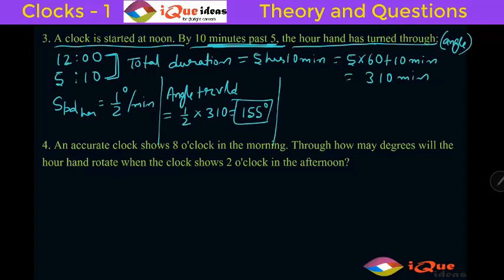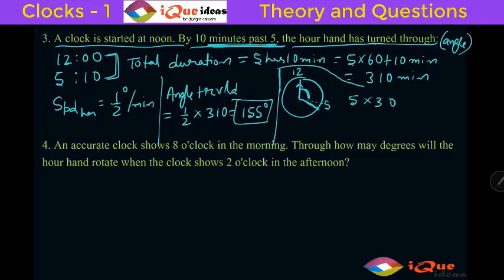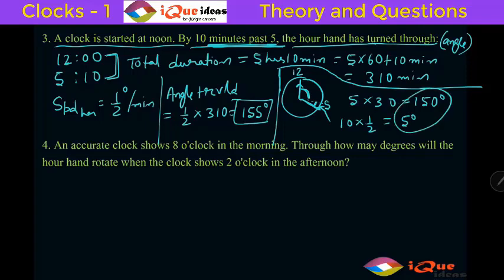Another way: at 12 o'clock the hour hand is at 12. At 5:10 it has reached just past 5. The angle from 12 to 5 is simply 5 into 30, which is 150 degrees. Then in the next 10 minutes, the hour hand moves 10 into half a degree, which is 5 degrees. So the total angle traveled is 155 degrees.